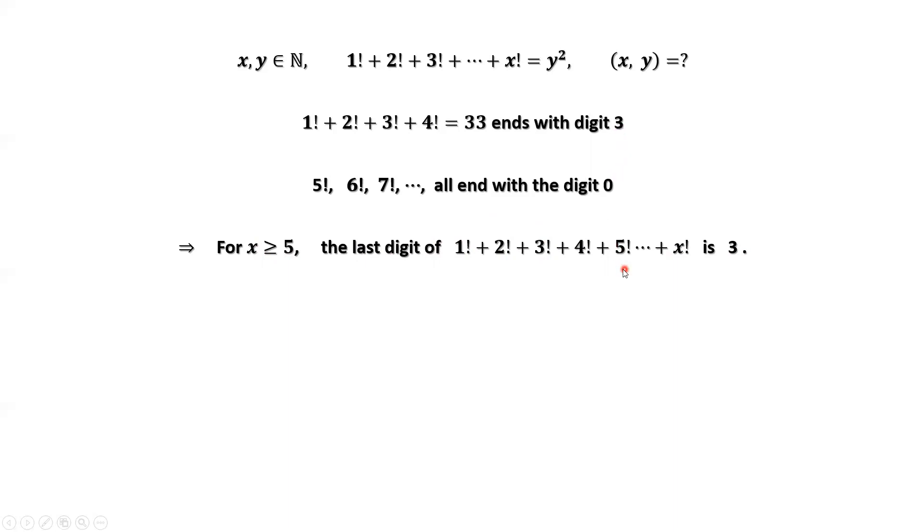After that, 5 factorial, 6 factorial, until x factorial, each term ends with 0. Therefore, the sum of x consecutive factorials ends with digit 3.